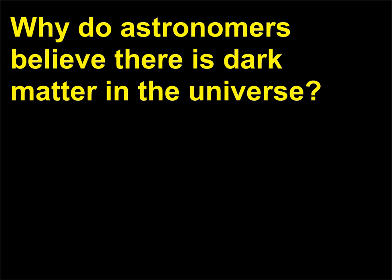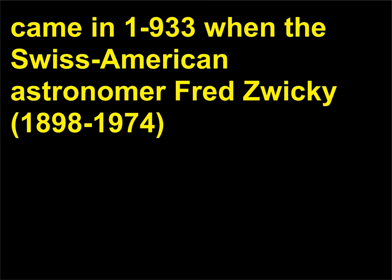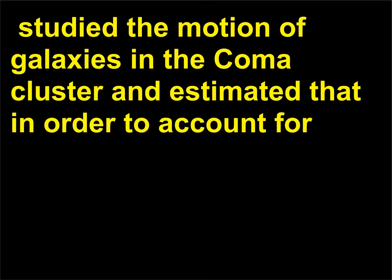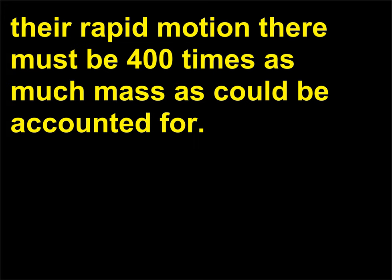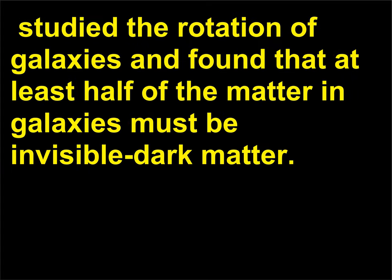Why do astronomers believe there is dark matter in the universe? The first hints that there is more to the universe than visible stars and galaxies came in 1933, when the Swiss-American astronomer Fritz Zwicky (1898–1974) studied the motion of galaxies in the Coma Cluster and estimated that in order to account for their rapid motion, there must be 400 times as much mass as could be accounted for. In the 1970s, the American astronomer Vera Rubin (1938) studied the rotation of galaxies and found that at least half of the matter in galaxies must be invisible dark matter.